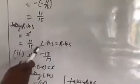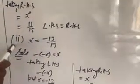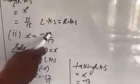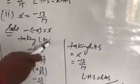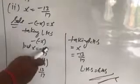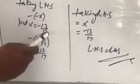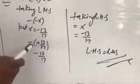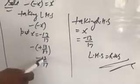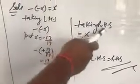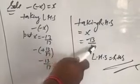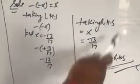RHS equals x equals 11 upon 15. Hence LHS equals RHS. Now second part: x equals minus 13 upon 17. Solution: minus bracket minus x equals plus x. Taking LHS — minus bracket minus x bracket close — put x equal to minus 13 upon 17.